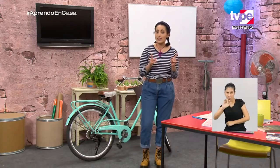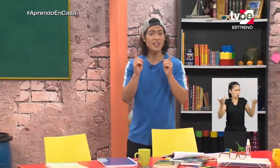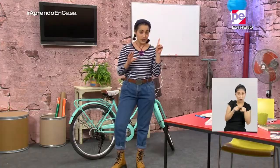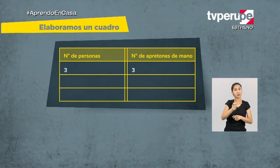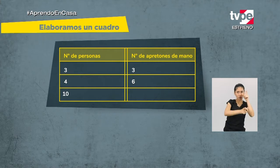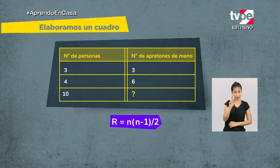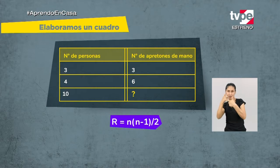Vamos a hablar de situaciones relacionadas con expresiones algebraicas que involucran igualdades y desigualdades de primer grado. Por ejemplo, pensaba en cuántos apretones de manos se evitan cuando se siguen los protocolos de bioseguridad. Si son tres personas, serían tres apretones de manos. Si son cuatro personas, serían seis. Pero si son diez personas, ¿cuántos apretones de manos serían? Aquí podemos representar la situación deduciendo una fórmula: R igual a n por n menos uno entre dos.